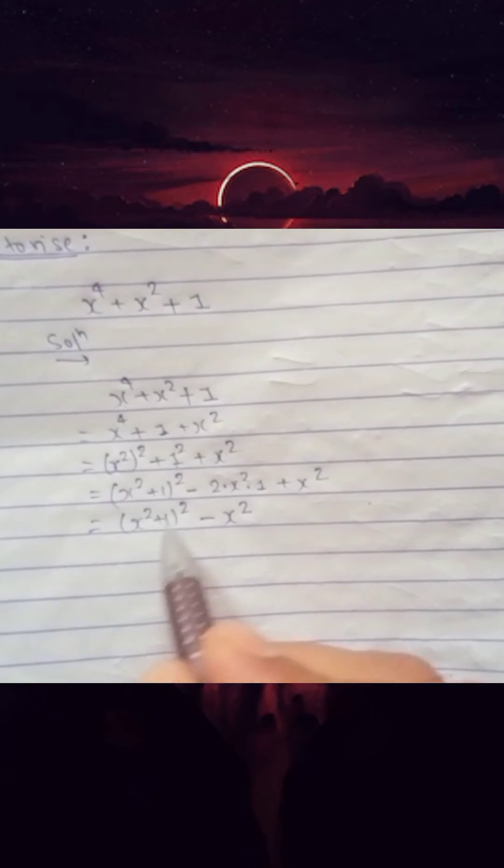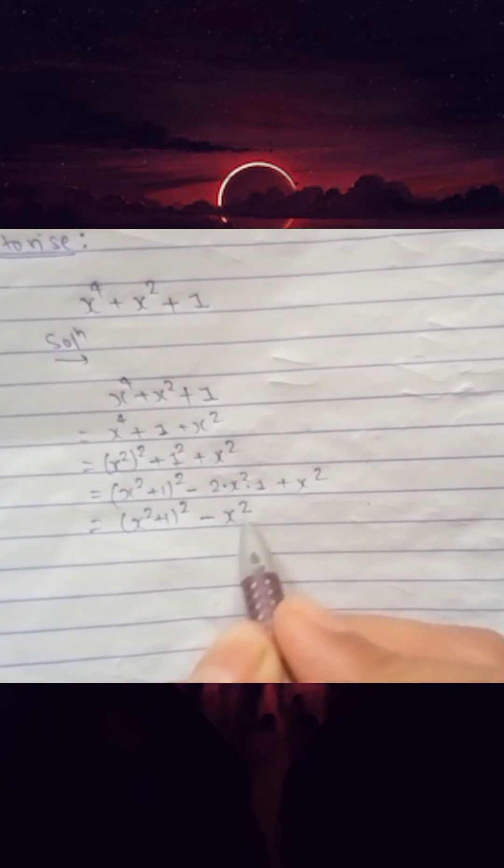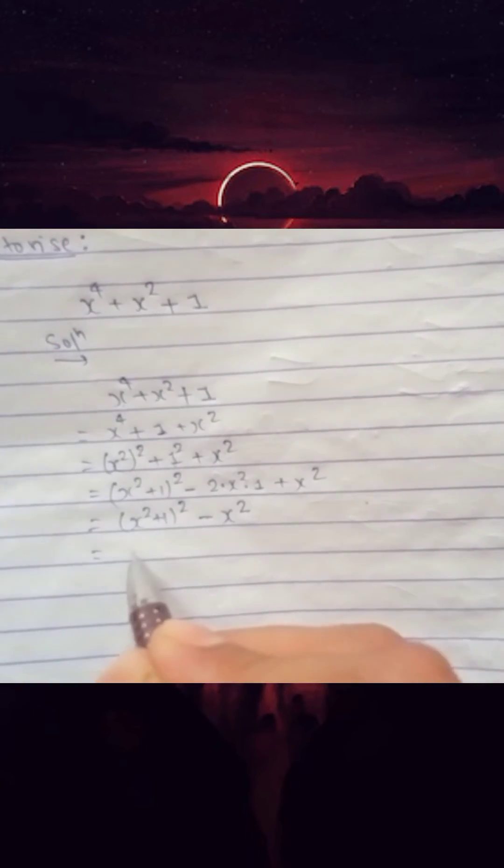Now you can simply use the formula a square minus b square. If you use the formula by supposing x square plus 1 as a and x as b, then you can get here.